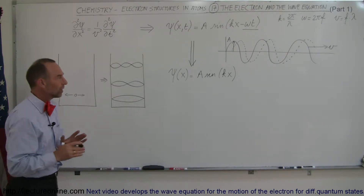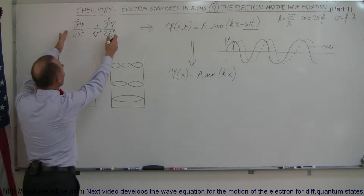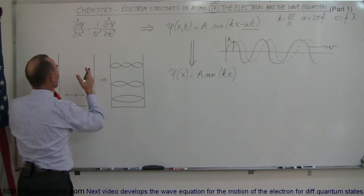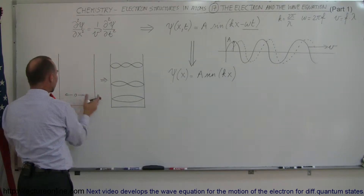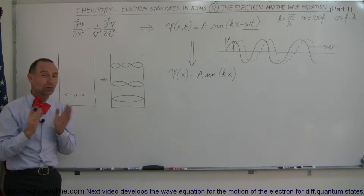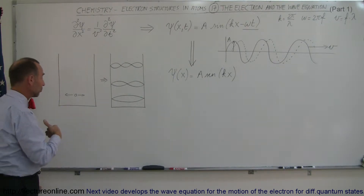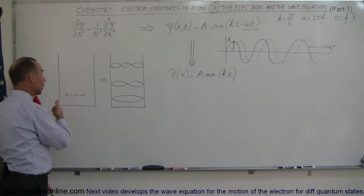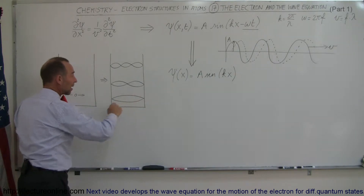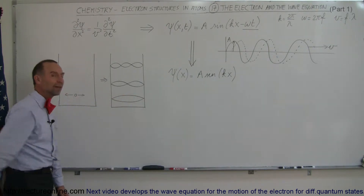We're going to first take a look at the general wave equation, which is right here, and then translate that somehow to have an electron move around in a box. Assuming that the electron behaves more like a wave than a particle, when an electron goes back and forth in a box, we assume that it goes around like a wave.